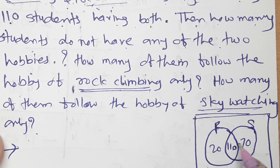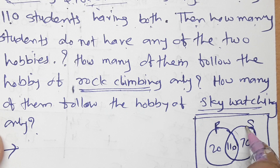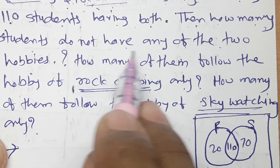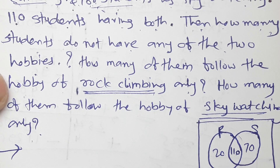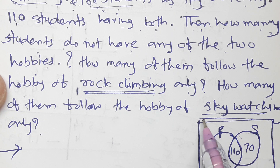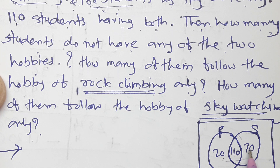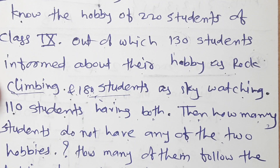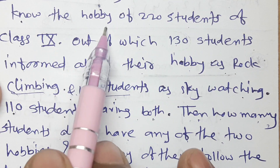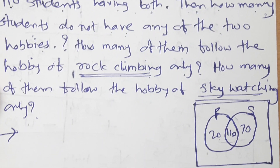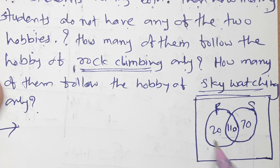The question asks: how many follow only rock climbing, how many follow only sky watching, and how many do not have either hobby. Adding all parts: 20 only rock climbing, plus 110 both, plus 70 only sky watching = 200 students total in the sets. Total survey is 220, so 220 minus 200 = 20 students have no hobby.